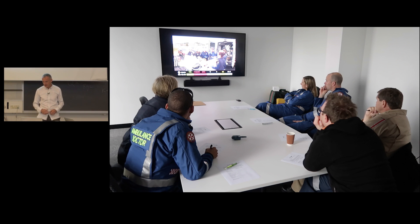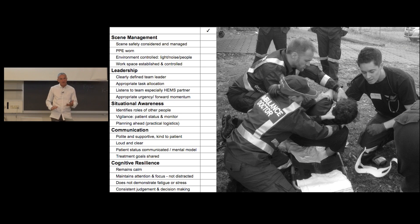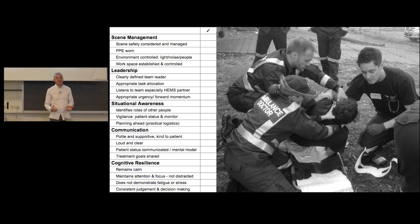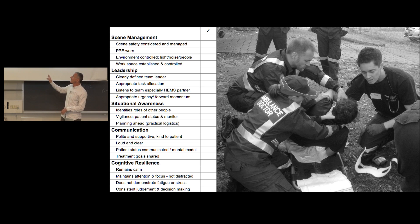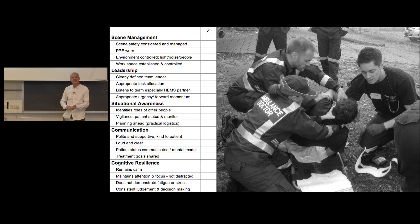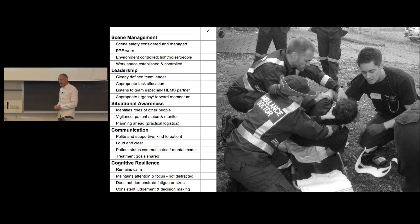That stops the disruption of flow — you no longer have learners turning to the facilitator asking what they can hear or whether there's a rash. That's been really useful for the fidelity of the sim. We mark all our simulations and find there are usually four or five clinical objectives per sim, but we're far more interested in the non-clinical stuff: scene management, leadership, communication, situational awareness, and cognitive resilience. We give the team a score at the end, as well as individuals — we're interested in team output.